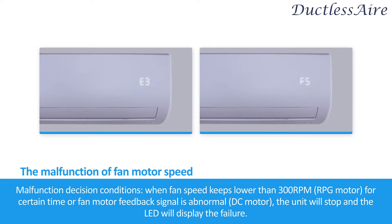Malfunction decision conditions: When fan speed keeps lower than 300 RPM (RPG motor) for a certain time, or the fan motor feedback signal is abnormal, the unit will stop and the LED will display the failure.